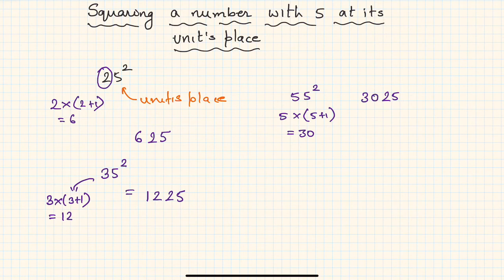Another one - let's say I have to find out 115 squared. Again, do the same thing. 25 will be the last two digits, and here what is left is 11, right? So 11 into 11 plus 1, that is 11 into 12, which is nothing but 132. So the square will be 13225.